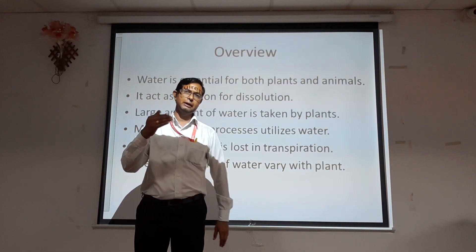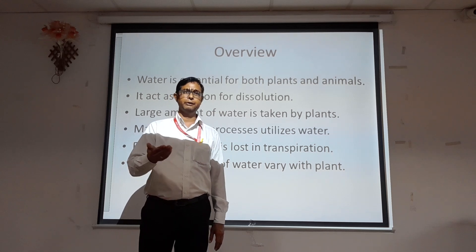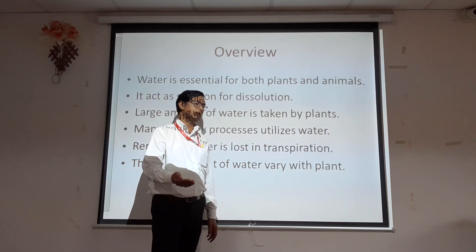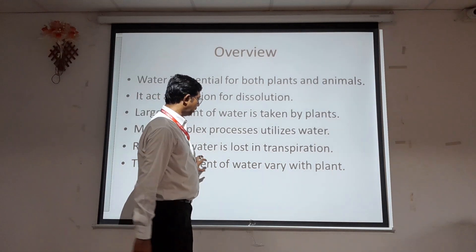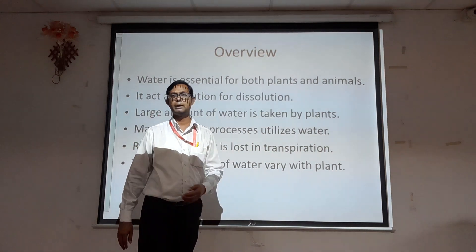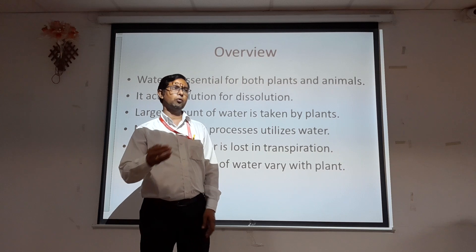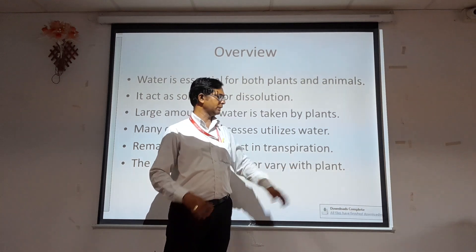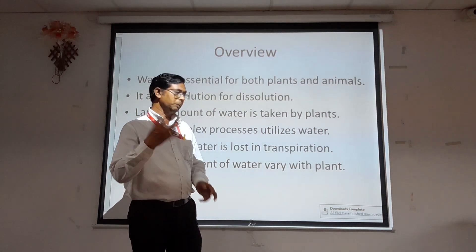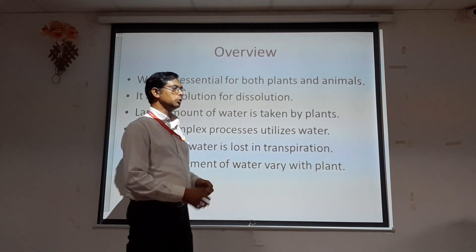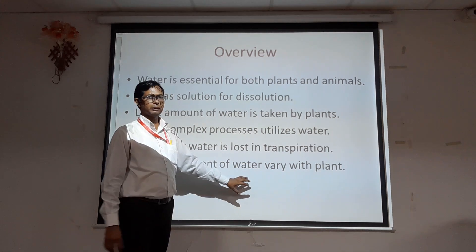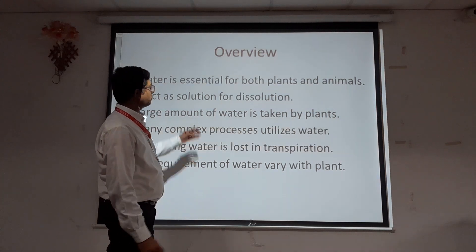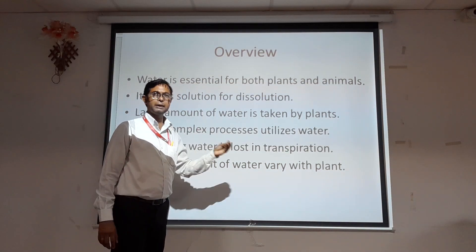The water requirement also varies with different types of organisms. For example, an elephant requires a different amount of water than a human. Similarly, the amount of water varies from plant to plant. For example, in a cactus the requirement of water is very less because the plant body is structured to consume less water, while some plants utilize a large amount of water.